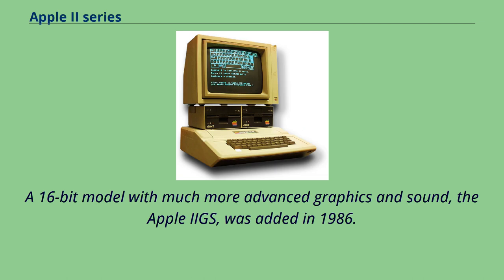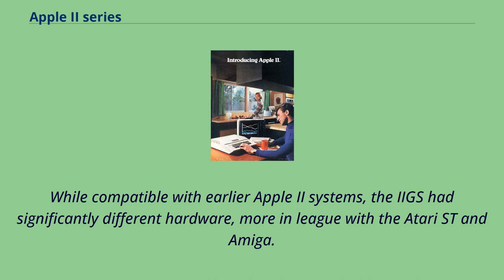A 16-bit model with much more advanced graphics and sound, the Apple IIgs, was added in 1986. While compatible with earlier Apple II systems, the IIgs had significantly different hardware, more in league with the Atari ST and Amiga.